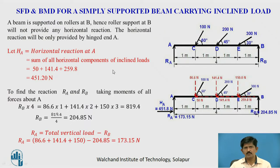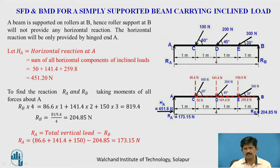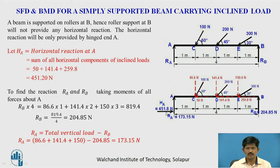The beam is supported on a roller at B, hence it will not provide any horizontal reaction. The horizontal reaction will be provided at the hinged end A. So the horizontal reaction HA will be the resisting force acting towards the right, balancing all horizontal components acting towards the left. Therefore HA = 50 + 141.4 + 259.8 = 451.2 N.